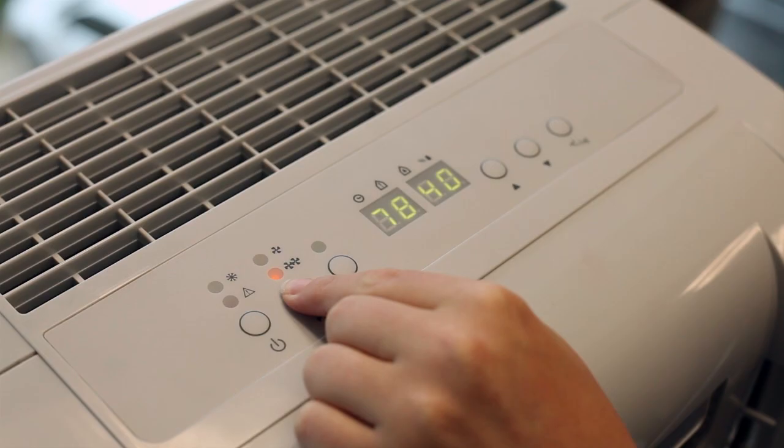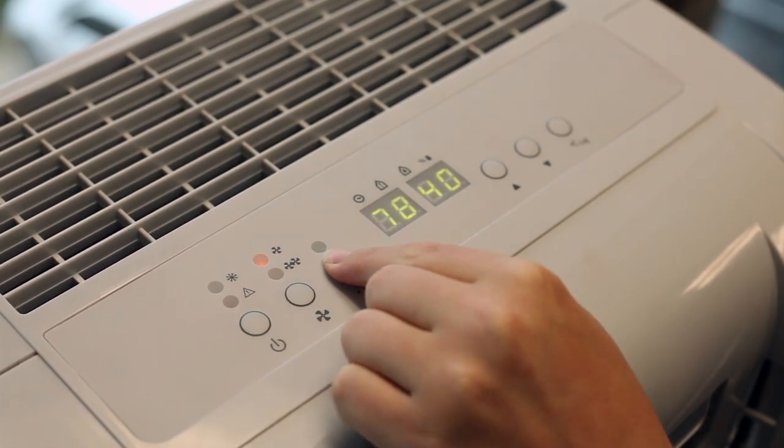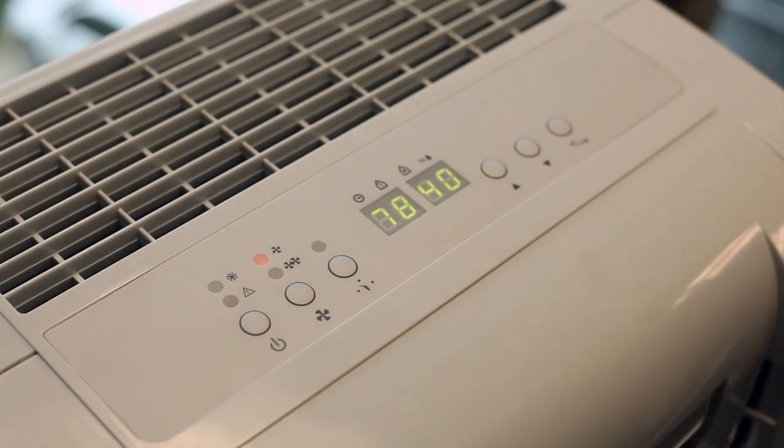Once the desired humidity level has been achieved, the compressor will automatically shut off. And even once the compressor is turned off, the fan continues to run to keep the air circulating and humidity levels even throughout the room.